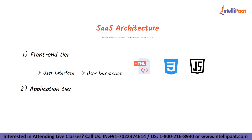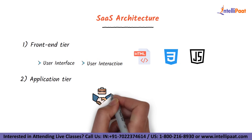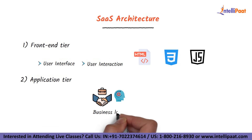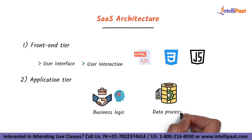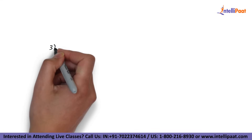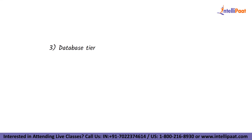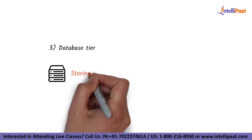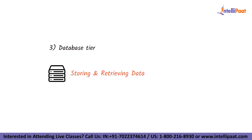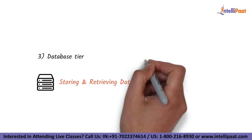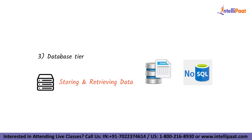The second is the application tier. The application tier is responsible for executing the business logic and performing the data processing. It is typically built using a combination of programming languages and frameworks. The third and last tier is the database tier. This database tier is responsible for storing and retrieving data. It is typically implemented using a relational database management system, NoSQL databases, or a combination of both.